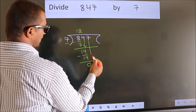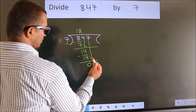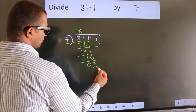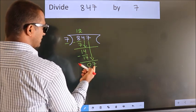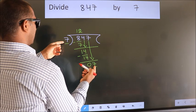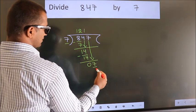After this, bring down the beside number, so 7 down, so 7. When do we get 7? In 7 table. 7 ones, 7.